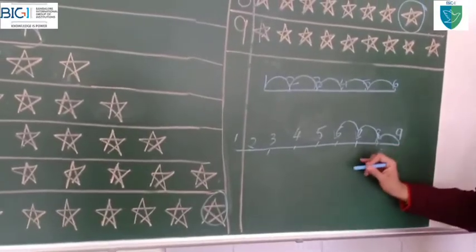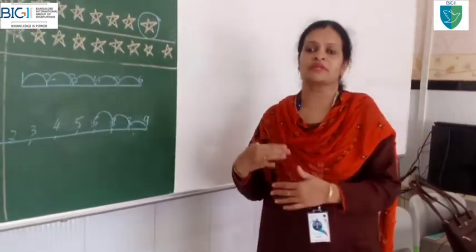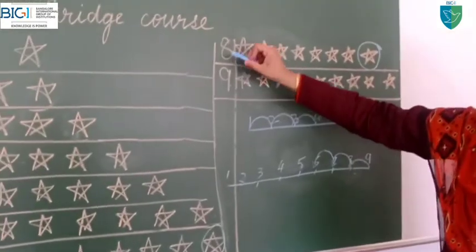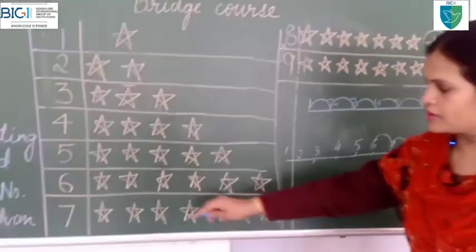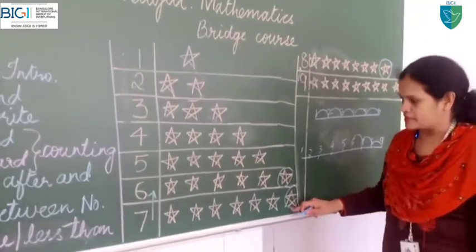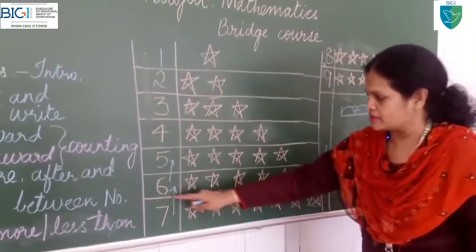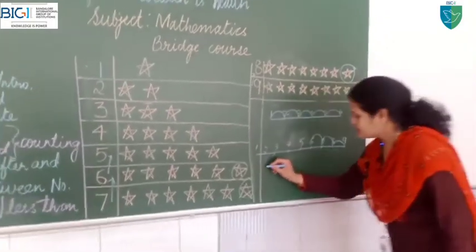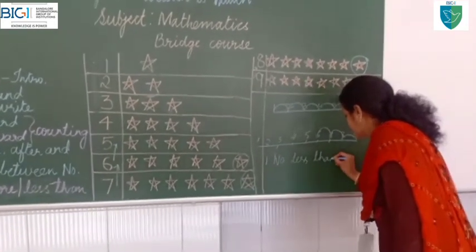Backward counting is nothing but exactly the opposite of forward counting. You are going to count the numbers in the backward or reverse direction, from bigger to smaller number. From 9 to 8 when you jump, there is one number less than the previous number. The same when you jump from 7 to 6 — there is one number less than the previous number. When you count numbers in the backward direction, you will have one number less than the previous number.